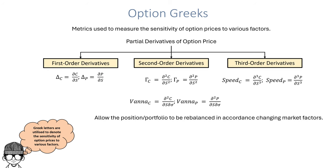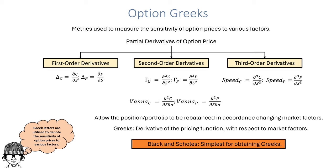Greeks essentially allow the position of the option, or the portfolio which holds options in addition to multiple assets, to be rebalanced in accordance with changing market factors. Hence they are vital for risk management. The Greeks are the derivatives of the pricing function with respect to market factors. So despite the drawbacks of the Black-Scholes model, it is the simplest approach towards obtaining Greeks. In reality, more complicated and complex models are utilized. However, let's continue with the Black-Scholes model during this series in order to understand the option Greeks.